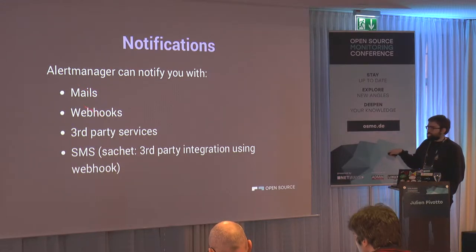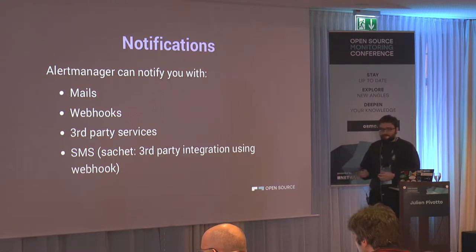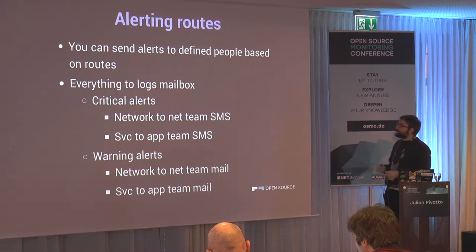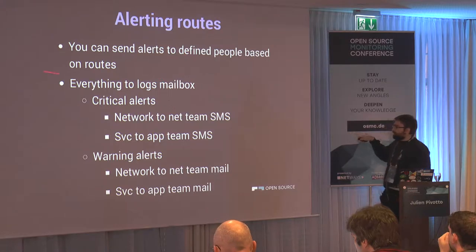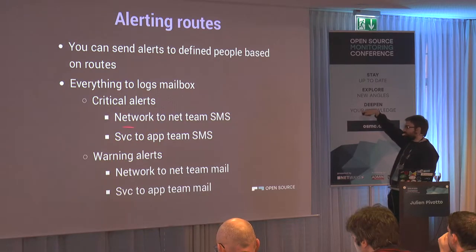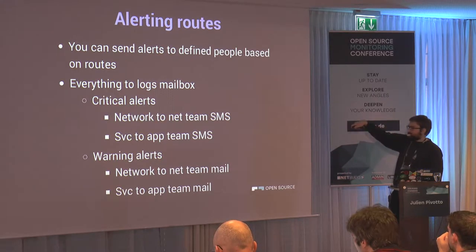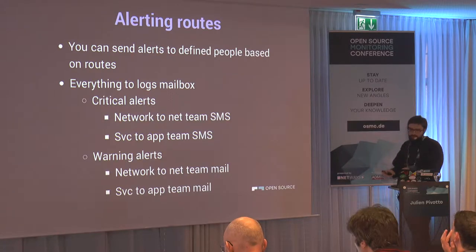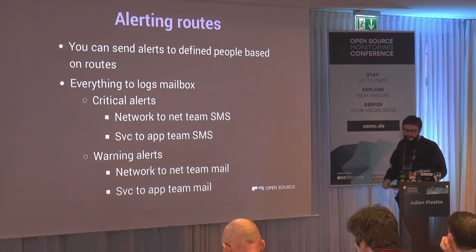You define routing rules in Alert Manager so alerts go to the right places — for example, all alerts first go to a log mailbox, then if critical, to the network team for network alerts or the service team for service alerts, and if critical, via SMS. Warnings just get an email. These routes can be very complex and deeply nested. Alert Manager has an interface where you paste your configuration and it shows a graph of your routing tree.